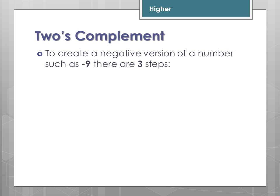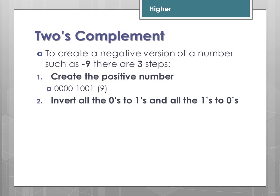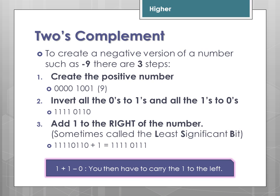So, how to actually use the 2's complement system? To create a negative version of a number, such as minus 9 — higher will only deal with integers, not real numbers — there are three steps. First, you create the positive number in binary, using two nibbles to represent an 8-bit number. At higher, you are only expected to deal up to and including 8 bits for 2's complement. Second, you invert all the 0s to 1s and all the 1s to 0s. Then, you add 1 to the right of the number. You need to remember that if there is already a 1 on the right-hand side, 1 plus 1 equals 0, and you carry the 1 to the left.